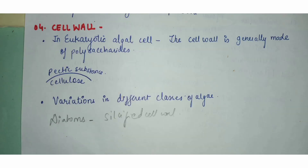The fourth characteristic is cell wall. We have already seen the prokaryotic cell wall in blue-green algae, which has mucopeptide — this is very different from the higher plants, where the cell wall has cellulose arranged so that the inner part is cellulose and the outer part contains pectic substances.